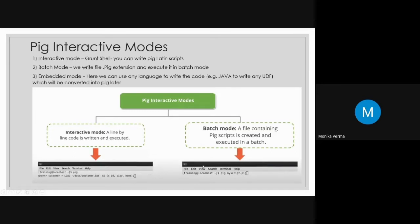If you want to run a script file that has load commands written in it, you can directly use 'pig filename.pig' to run in batch mode. There is also one more mode — embedded mode — where if you want to write UDFs in Java or another language other than Pig Latin, we use embedded mode.